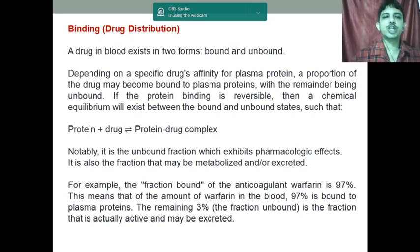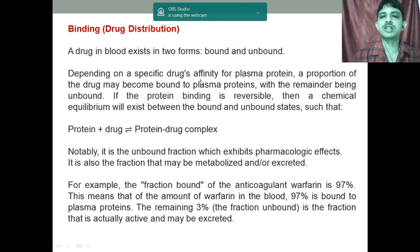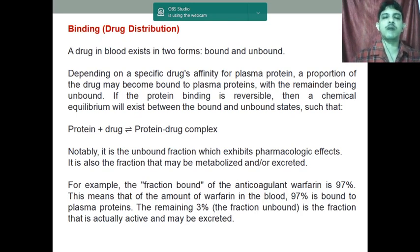Now, regarding drug distribution and binding: a drug present in the blood exists in either the bound form or the unbound form, as we have already mentioned. Depending upon the drug's affinity towards the protein, a proportion of the drug becomes bound to the plasma protein, with the remainder present as the unbound form. It is not the case that 100% of the drug will be bound or unbound — some percentage binds to the plasma and the remaining percentage is present in the free form.